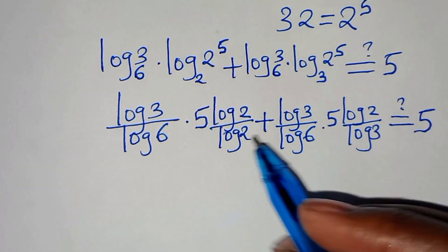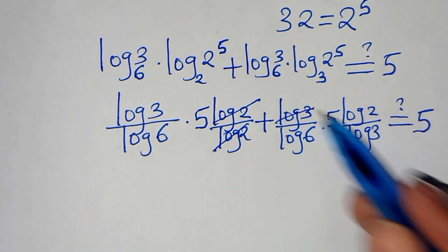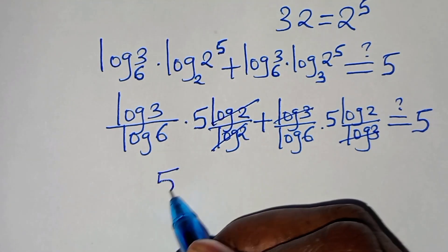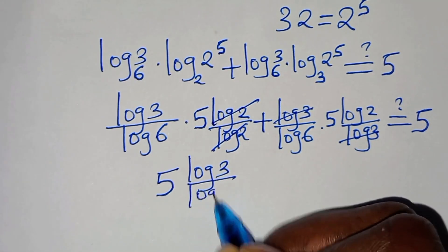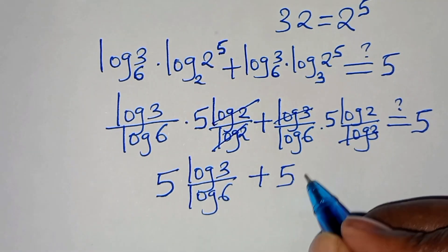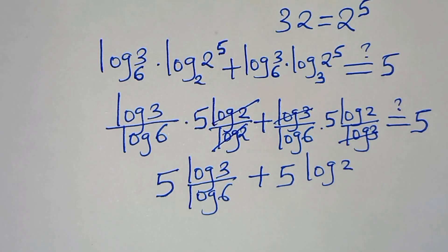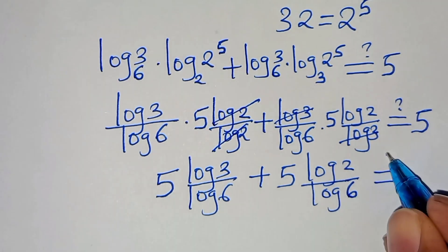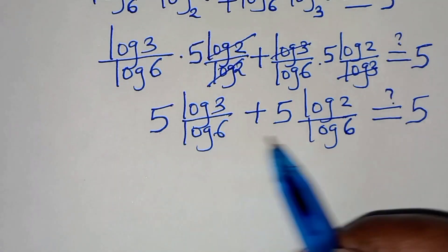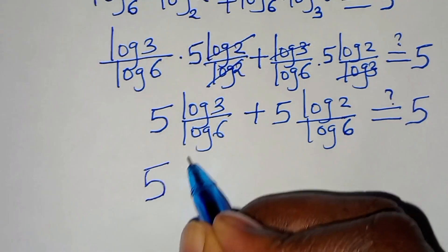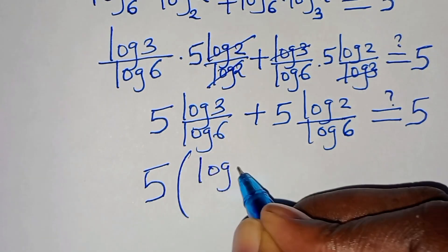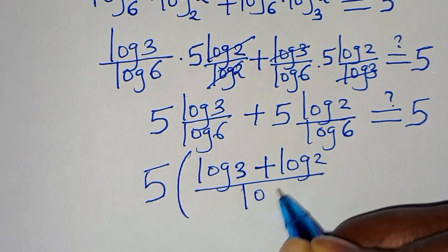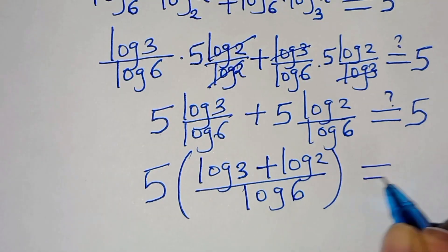Using the product property, log 3 plus log 2 equals log(3·2) equals log 6. So we have 5 times (log 6 / log 6), and log 6 over log 6 simplifies to 1. This gives 5 times 1 equals 5. The left-hand side equals the right-hand side.